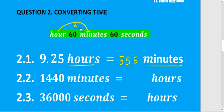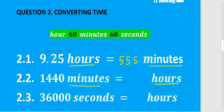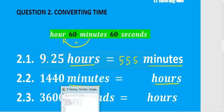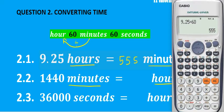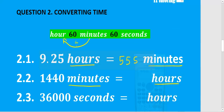For 2.2 we want to convert minutes back to hours. Going backwards, so we divide by 60. Taking 1,440 and dividing by 60 gives us 24 hours, which is a day.